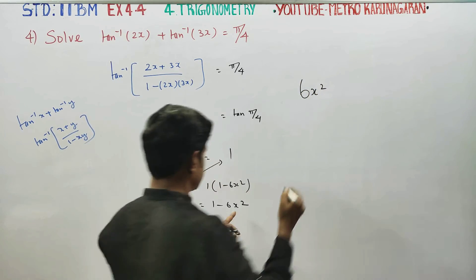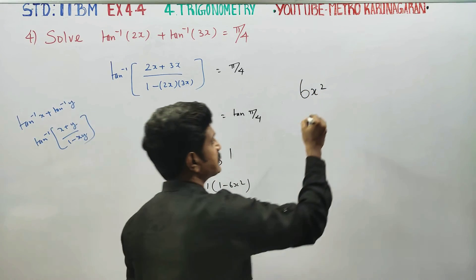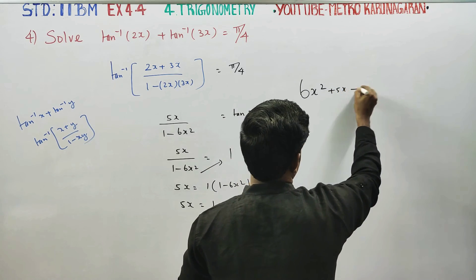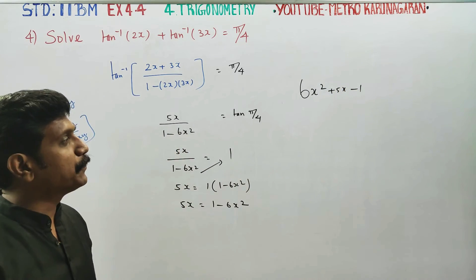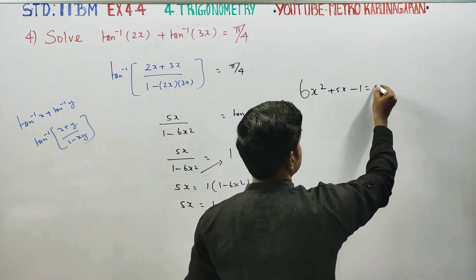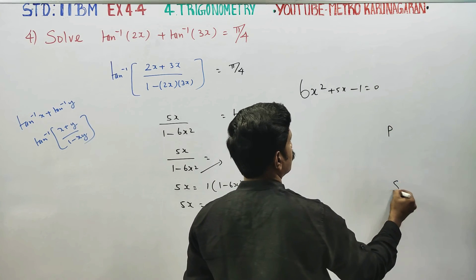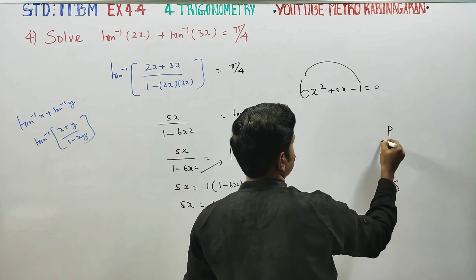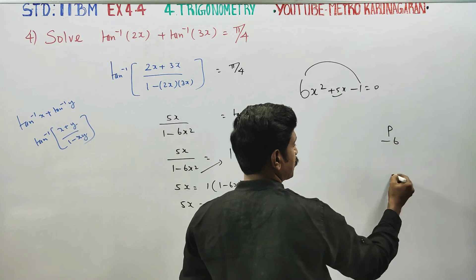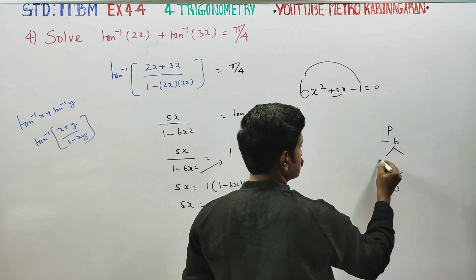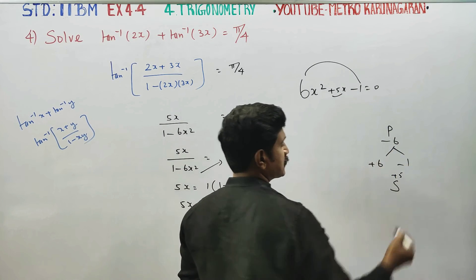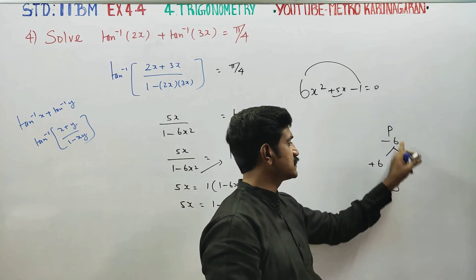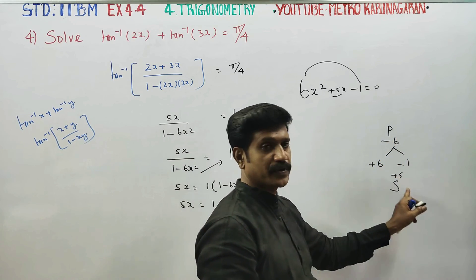Rearranging, 6x squared plus 5x minus 1 equals 0. Factoring this quadratic equation.